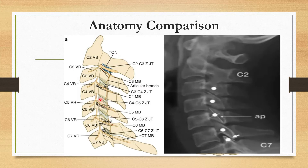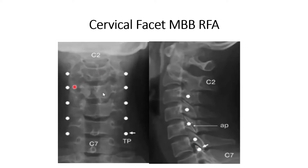This is the medial branch. This is the articular process. In the lateral view, exactly the middle of the articular process is our target. We usually enter the needle with the patient in the prone position.